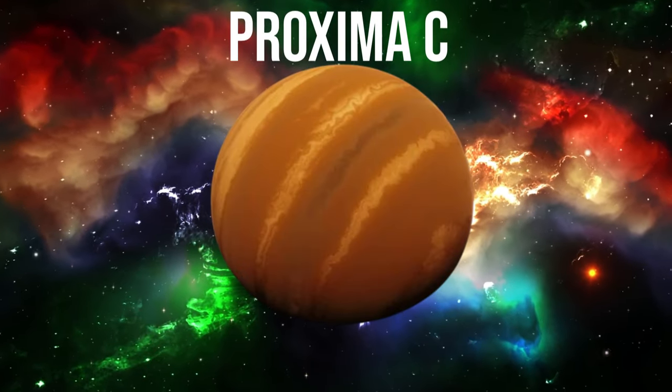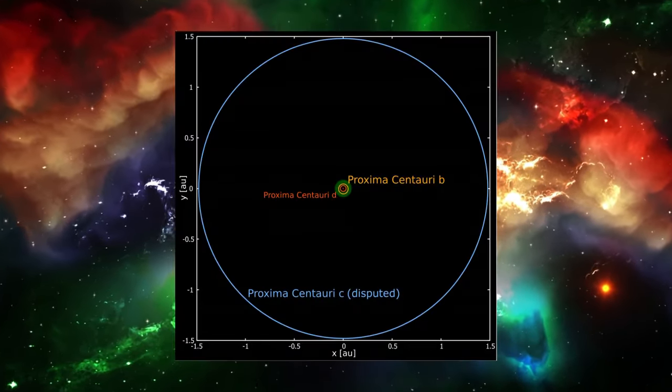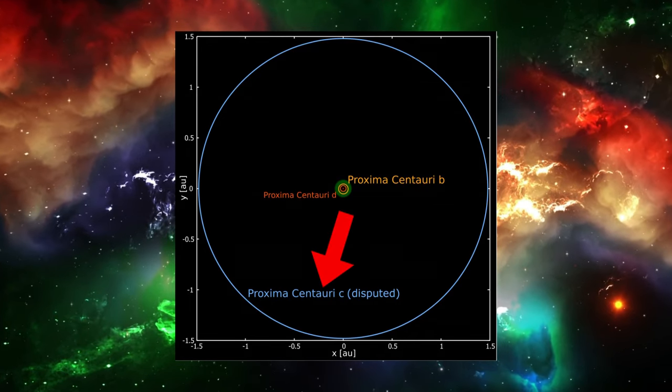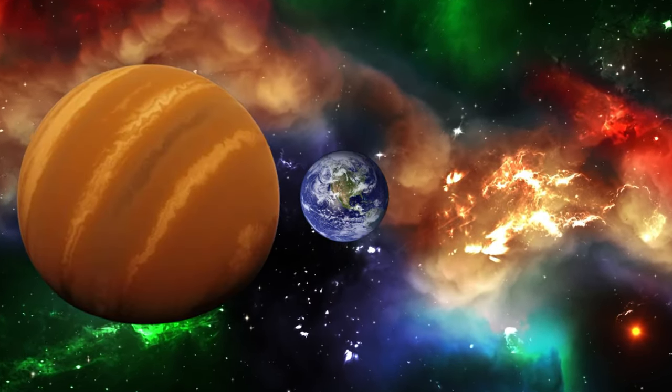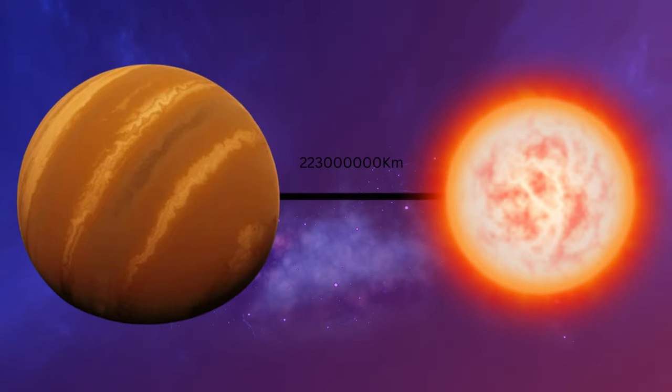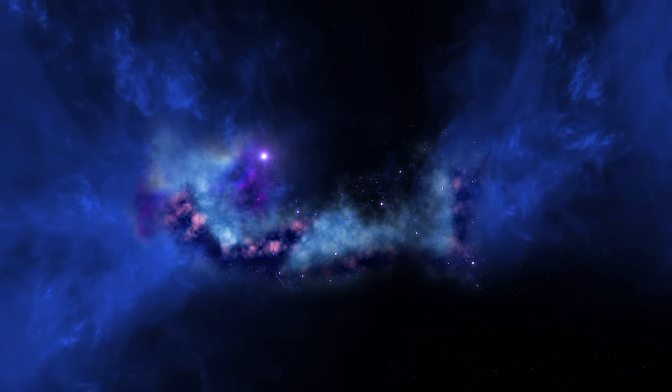Proxima C is the candidate exoplanet of the Proxima Centauri system, believed to be around 7 times the mass of the Earth and at an approximate orbit distance of 223 million kilometers, means it is not within the habitable zone.